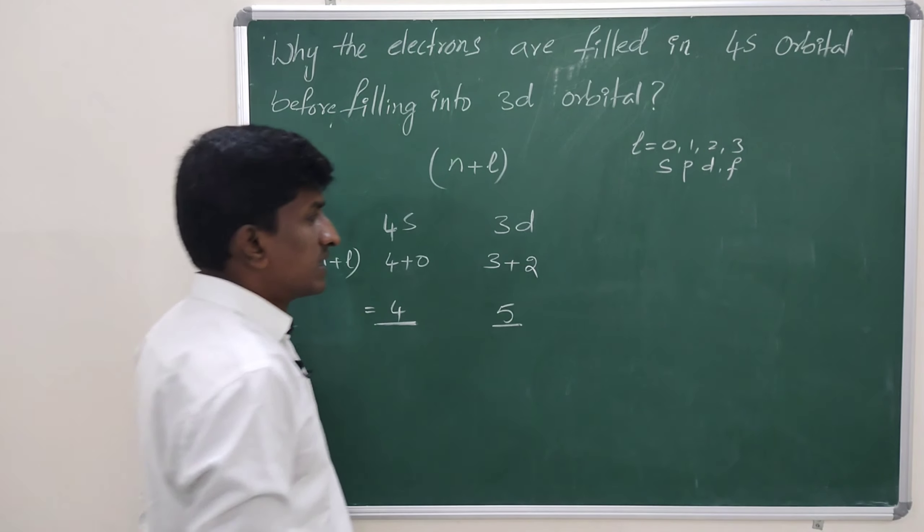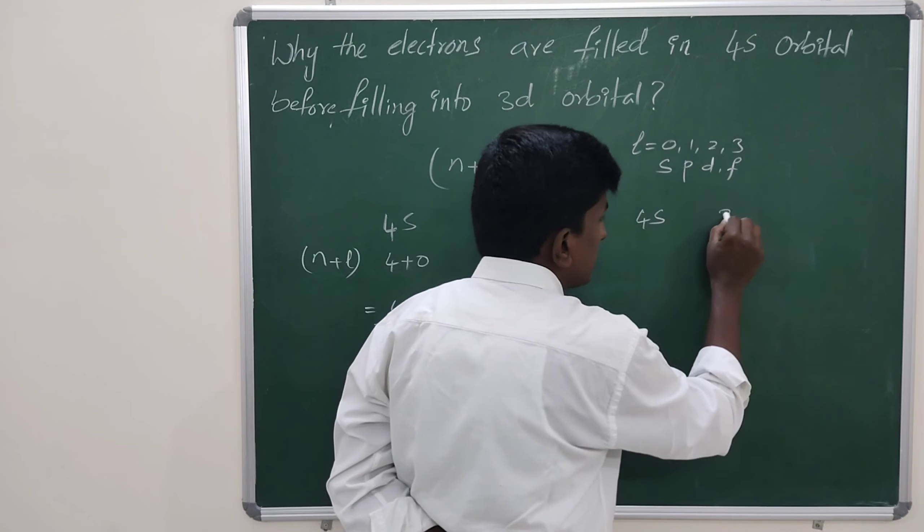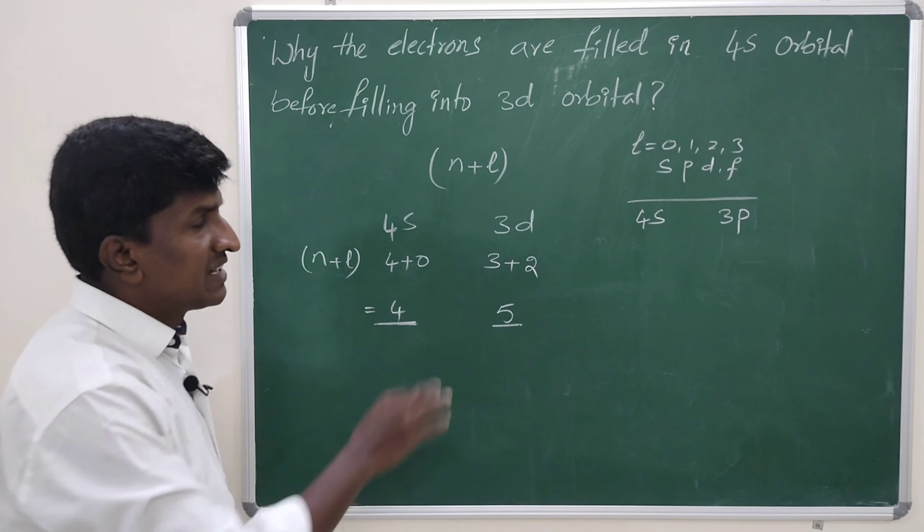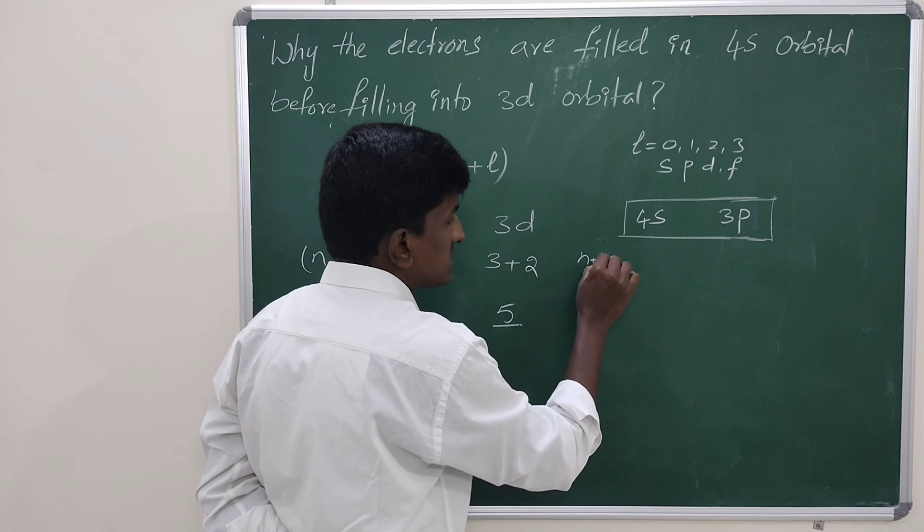Similarly, let us discuss one more example. 4s and 3p, into which orbital the electrons are first filled? Let us calculate n plus l value.